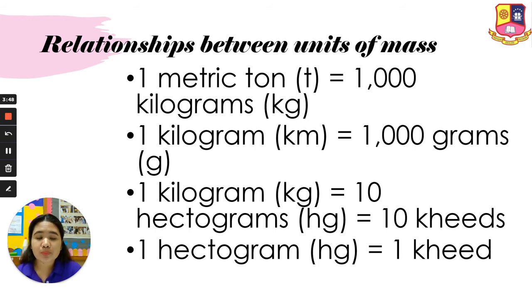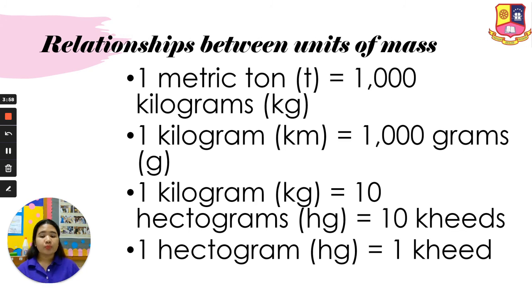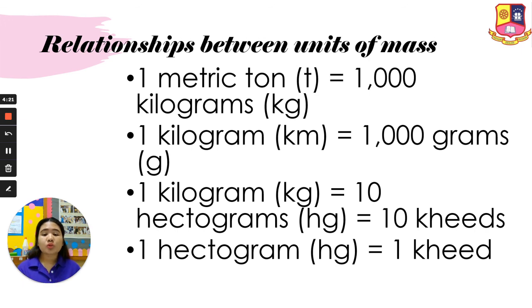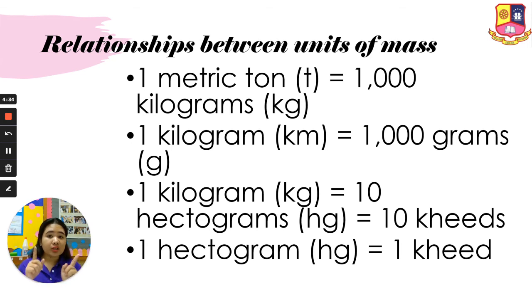Now let's look at the relationship between the units of mass. In 1 metric ton, there are 1,000 kilograms. In 1 kilogram, there are 1,000 grams. In 1 kilogram, there are 10 hectograms, or 10 kids — so the other name for kid is hectogram. And 1 hectogram equals 1 kid. Remember: 1 metric ton = 1,000 kilograms; 1 kilogram = 1,000 grams; 1 kilogram = 10 hectograms or 10 kids; 1 hectogram = 1 kid. That's why on the weighing scale, there are 10 kids in 1 kilogram.